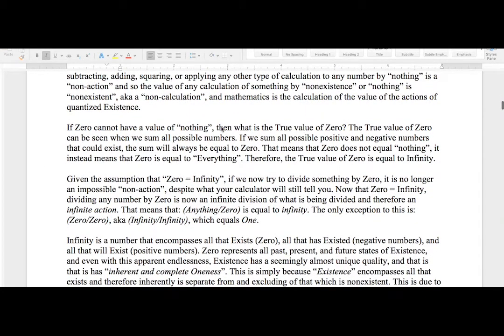If zero cannot have a value of nothing, then what is the true value of zero? The true value of zero can be seen when we sum all possible numbers. If we sum all possible positive and negative numbers that could exist, the sum will always be equal to zero. This means that zero does not equal nothing. It instead means that zero is equal to everything. Therefore, the true value of zero is equal to infinity.